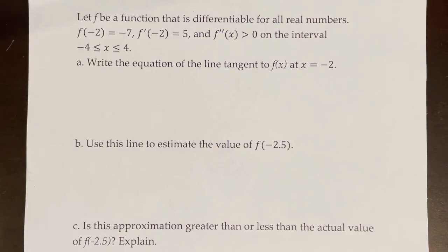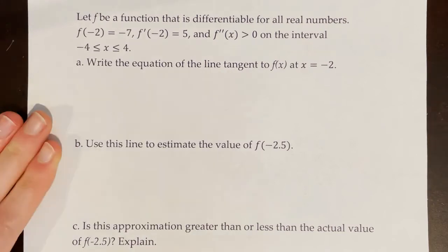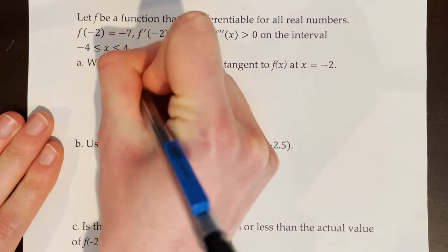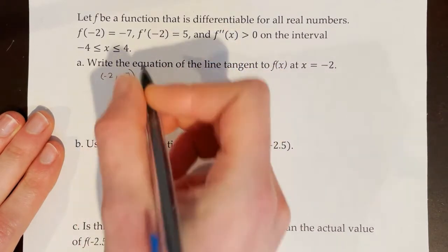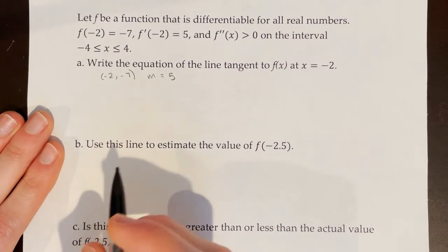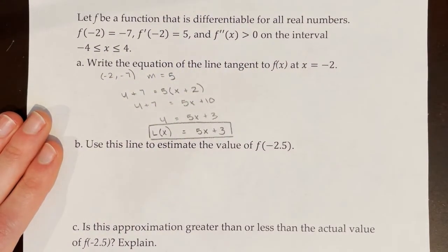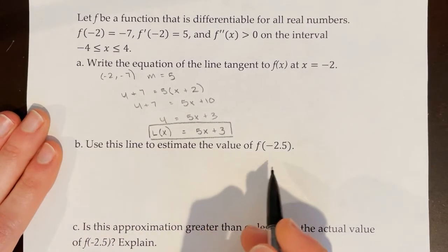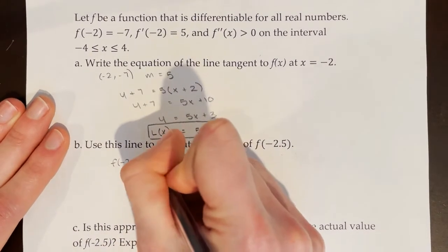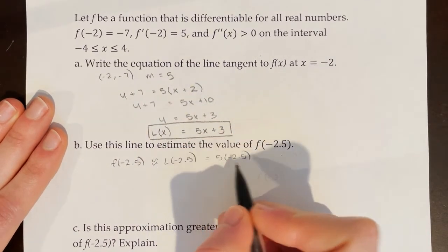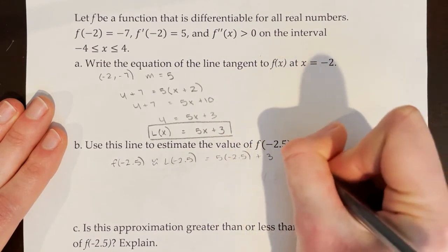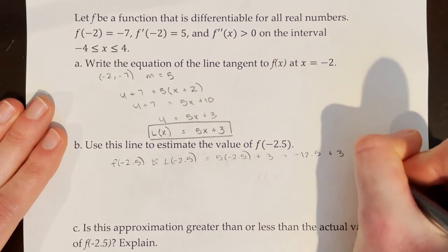Let f be a function that is differentiable for all real numbers. f of negative 2 equals negative 7, f prime of negative 2 equals 5, and f double prime of x is greater than 0 on the interval from negative 4 to 4. Part A: write the equation of the line tangent to f of x at x equals negative 2. The point on the tangent line is (negative 2, negative 7) and the slope is 5, so we label the equation L of x. Part B: use this line to estimate f of negative 2.5. f of negative 2.5 is approximately L of negative 2.5, which is 5 times negative 2.5 plus 3, equal to negative 12.5 plus 3, or negative 9.5.